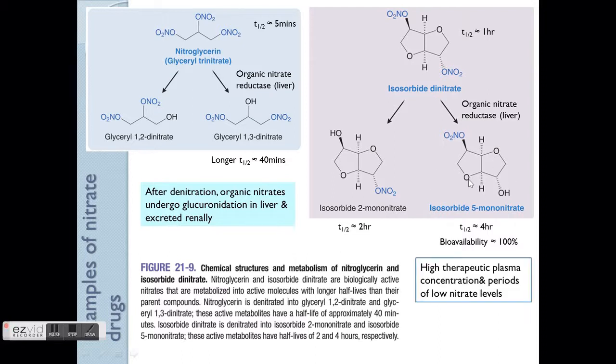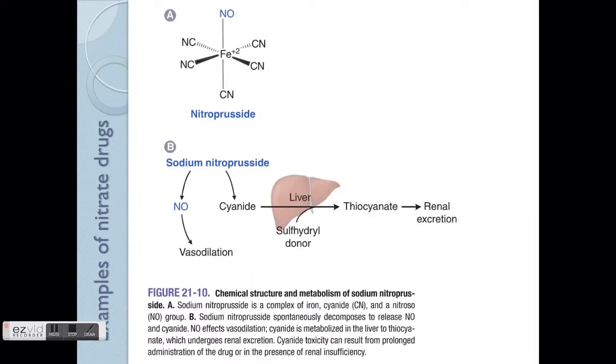Another good part of this ISMN is that its bioavailability is actually 100% because it is an active drug by itself. It does not require further activation like these two friends here, which is GTN or ISDN. That's why ISMN is more commonly used for the daily dose because it can cause this high therapeutic plasma concentration. And because the half-life is just 4 hours, it's just nice. So we can give it as a daily dose, whereby there will be some periods of time which has low nitrate levels to allow the thiol group to recover. Remember the thiol group from the second slide.